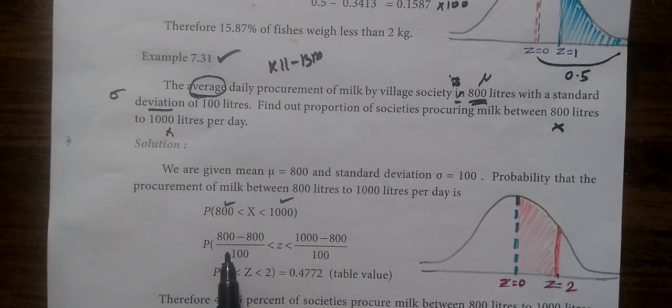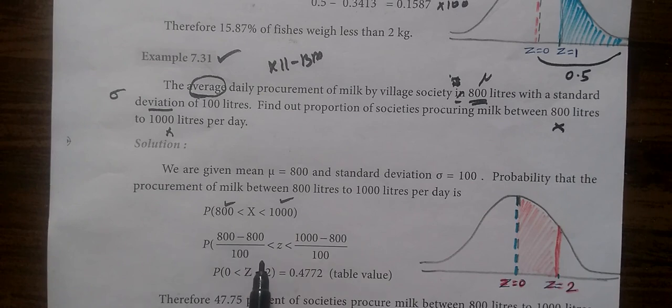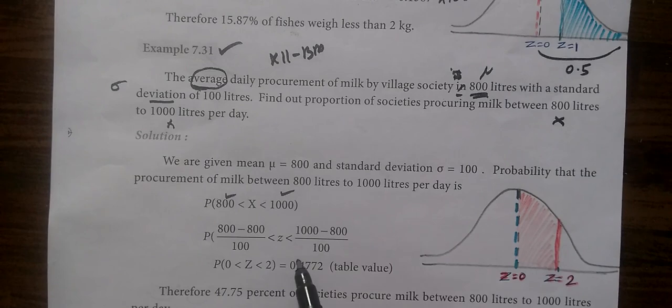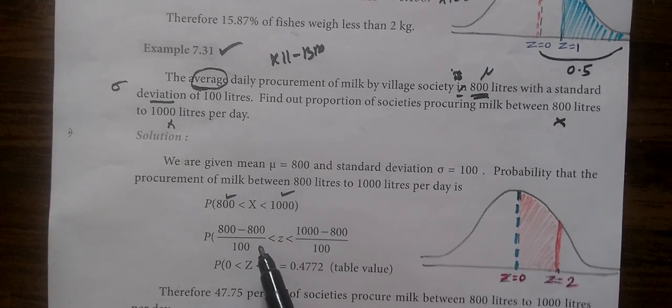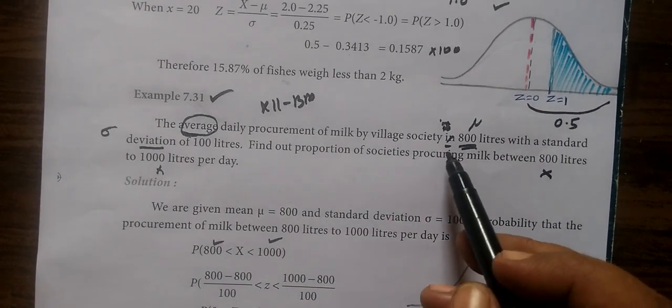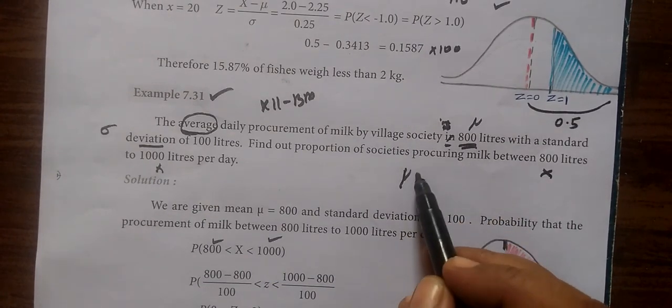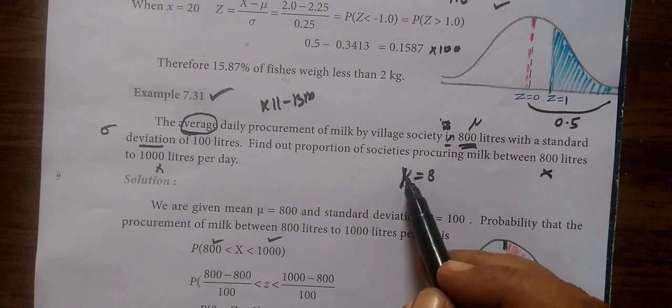So this is the average. This is 800. Correct. I am confused. This is the average.